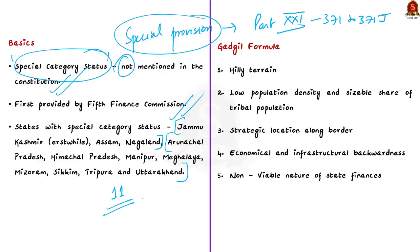At that time, states were chosen using the Gadgil Formula. According to this formula, states are chosen based on criteria: they must have hilly and difficult terrain; low population density or a sizable share of tribal population; strategic location along borders with neighboring countries; economic and infrastructural backwardness; and non-viable state finances.